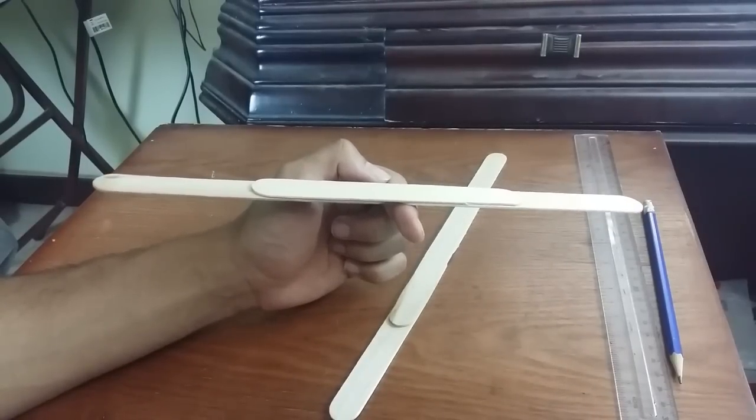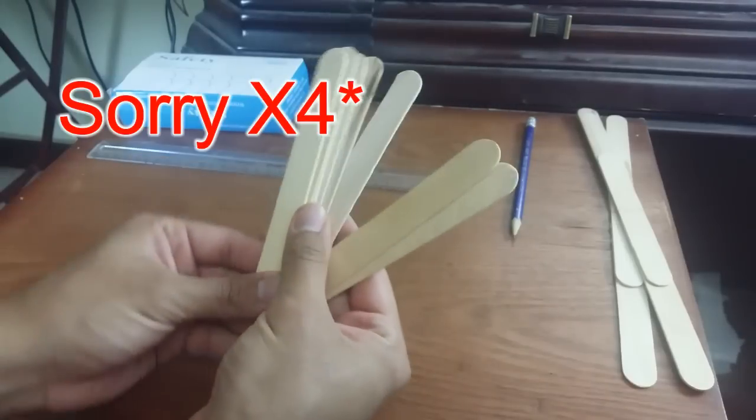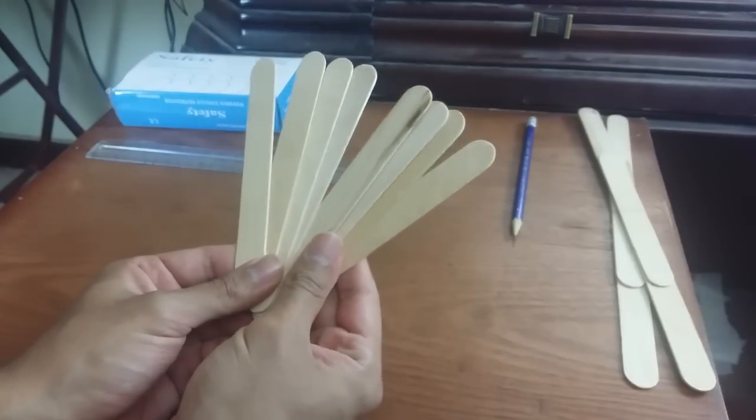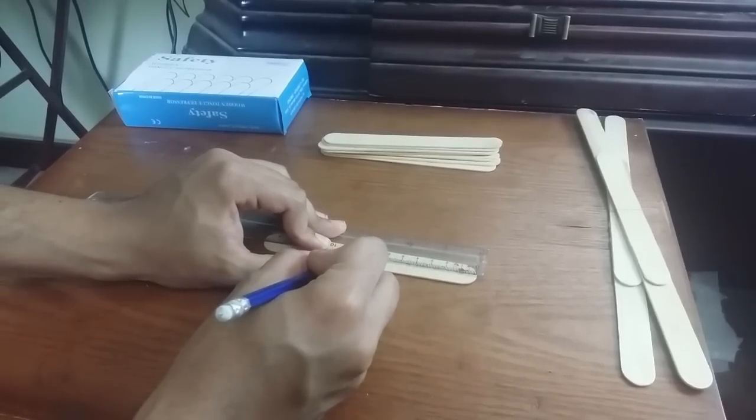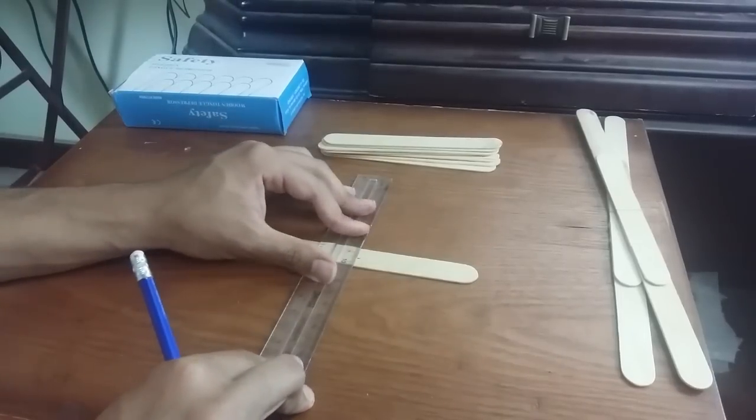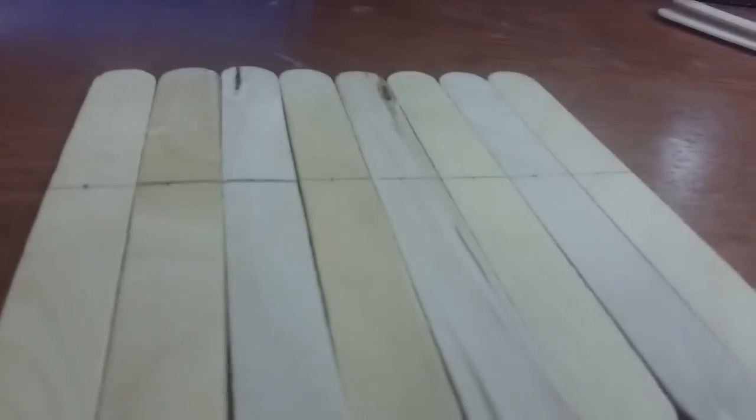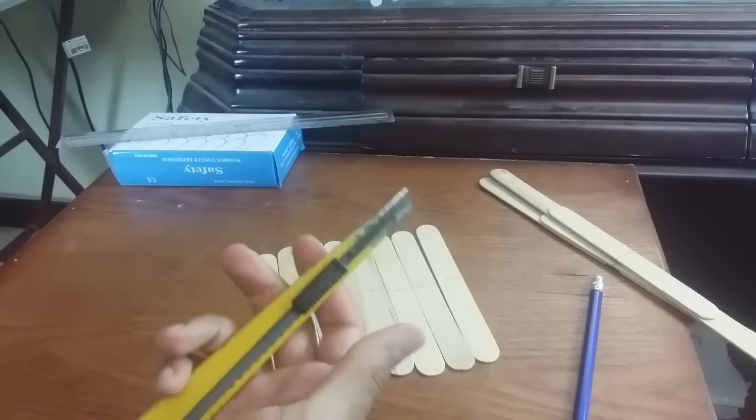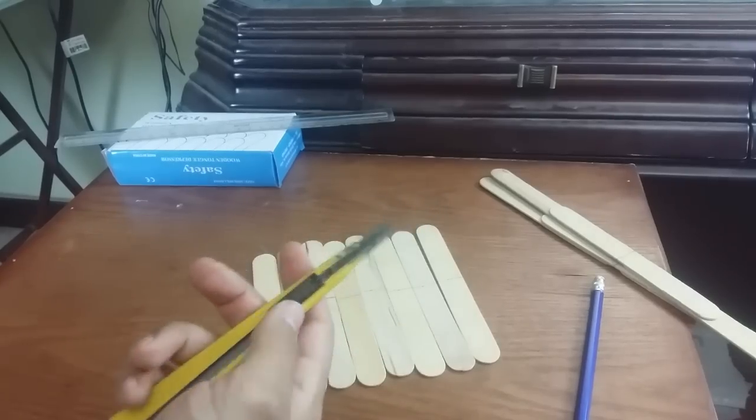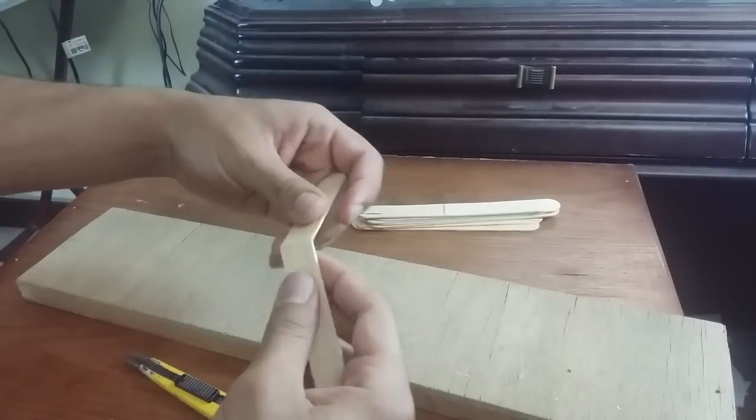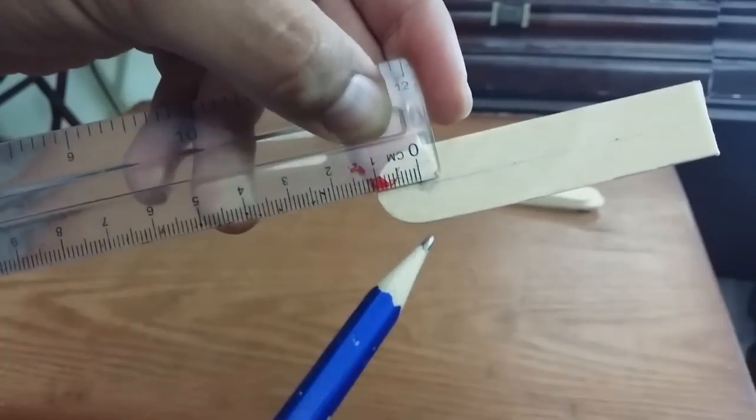Now we will need eight more wooden sticks. Put a mark at eight centimeters in each one of them and draw a line. Now we use a sharp tool to cut them off.